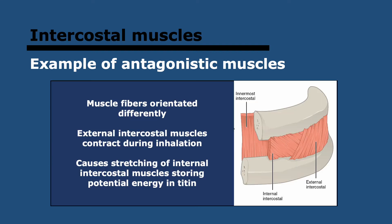Let's look at antagonist muscles. We can see an example with the intercostal muscles, which are the muscles between the ribs, made of external and internal layers. These layers are oriented differently, meaning contraction of different layers moves the ribcage in opposite directions. When the external intercostal muscles contract, that expands the ribcage allowing inhalation, while simultaneously stretching the internal intercostal muscles — storing potential energy in their titin. During exhalation, the internal intercostal muscles contract, aided by titin recoiling. The external intercostal muscles are then stretched and their titin stores potential energy. So they are antagonistic — they do the exact opposite at any given time and help each other to contract.